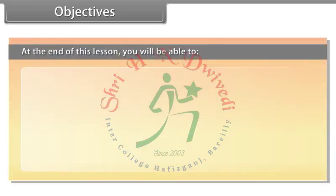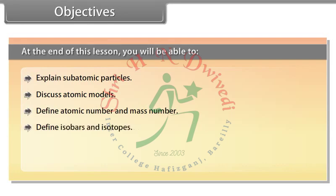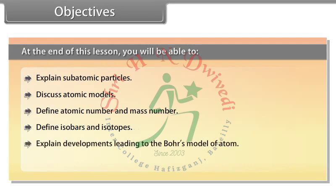At the end of this lesson, you will be able to: explain subatomic particles, discuss atomic models, define atomic number and mass number, define isobars and isotopes, explain developments leading to the Bohr's model of atom, and explain Bohr's model of hydrogen.